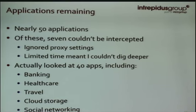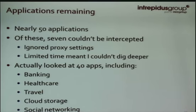Once I got started, I realized there were about seven that I wasn't going to be able to easily test — they were ignoring the man-in-the-middle proxy, using some other OS call to get to the network that wasn't proxy-aware. In the long run, I actually ended up looking at about 40 apps, including bank apps, some healthcare apps, a bunch of different travel and frequent flyer miles apps, travel management, some cloud storage, and a couple of social networking apps.